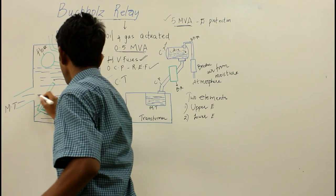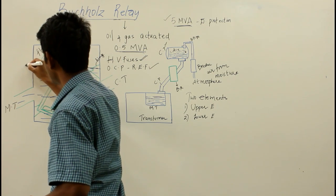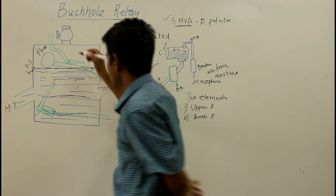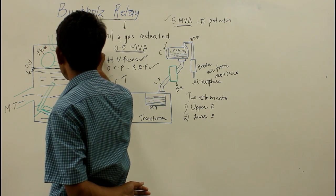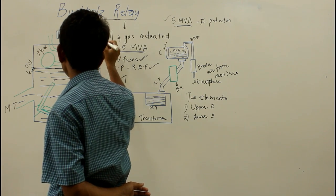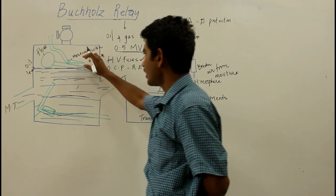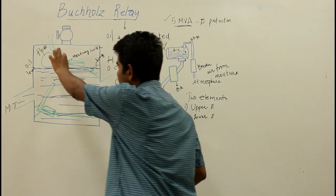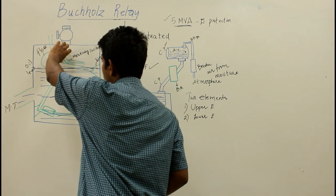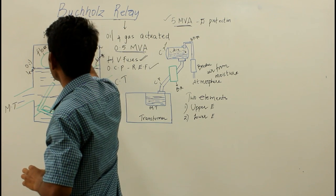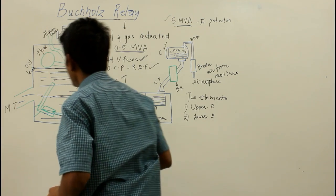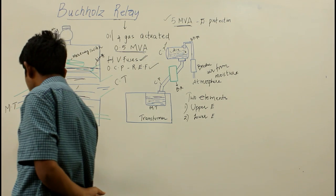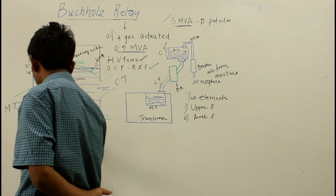Depending on the position of the oil, the float can move up and down. One mercury switch is fixed on the float such that the alignment of the mercury switch depends on the position of the float. If the float goes down, the alignment of the mercury switch also changes. The electrical leads are taken from this mercury switch through a molded terminal block to the alarm circuit. The lower element consists of a baffle plate.